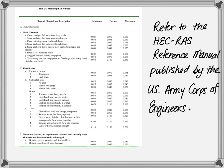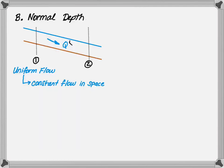When trying to determine normal depth, it is helpful to remember that flow is uniform within the channel. This means there's a constant flow within the channel spatially, resulting in a constant depth within the channel as shown in the graph.